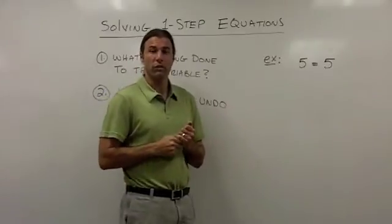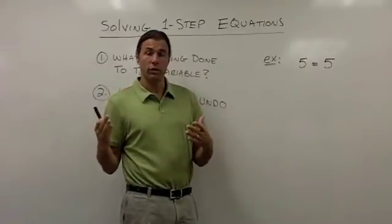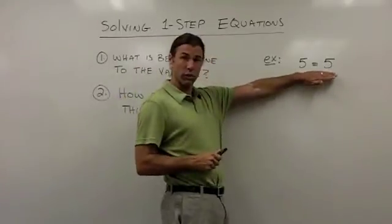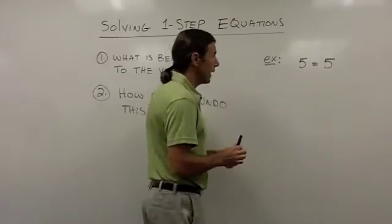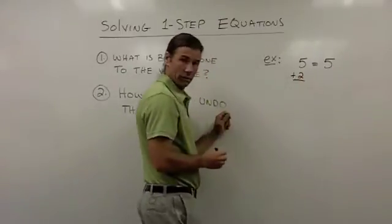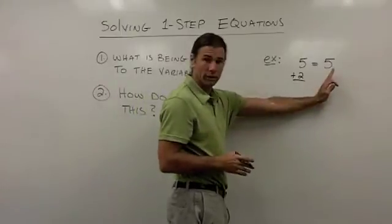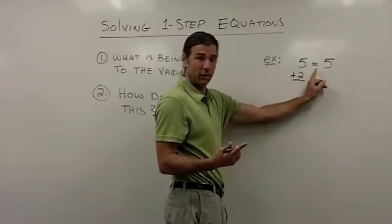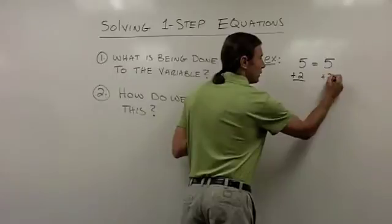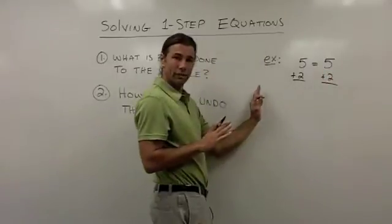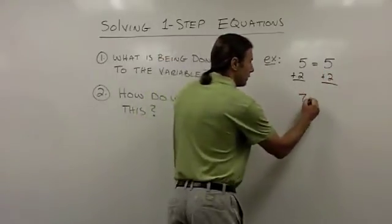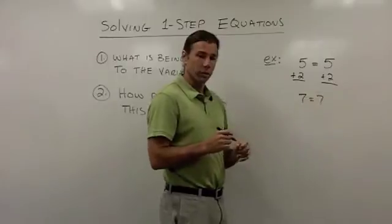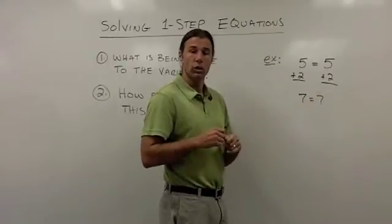Now let's take a look at an example that will help us understand why when we do something to one side of the equation, we have to do the same thing to the other side. I started out with a very simple equation: 5 equals 5. If I were to add 2 to the left side but not to the right side, we would no longer have equality — I would have the statement 7 is equal to 5. So if I add 2 to the left side, I need to add 2 to the right side so I still end up with a true statement. Doing something to one side but not the other, you'll lose the equality in your equation.